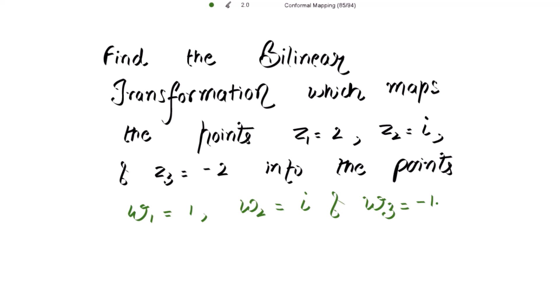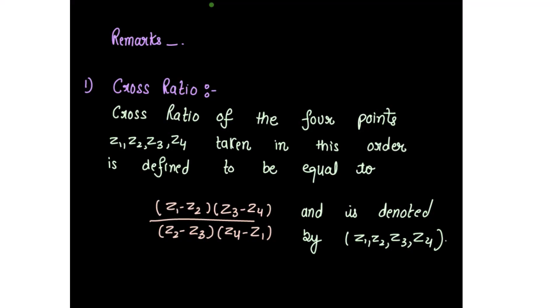Before starting with the solution, we have to know about the term cross ratio. The cross ratio of four points z1, z2, z3, z4 taken in this order is defined as: z1 minus z2 divided by z2 minus z3, then z3 minus z4 divided by z4 minus z1. This is how you complete the cycle, and it is denoted as (z1, z2, z3, z4).